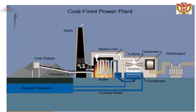This diagram describes a coal-fired power plant. The stack or chimney is the passage for exhausting gases. The steam line shows steam produced after combustion of fuel in the boiler. The turbine is where steam expansion takes place; the generator converts mechanical energy to electrical energy, and the switchyard distributes the energy. The condenser condenses steam with cooling water from the cooling tower or river or reservoir. Coal is supplied from the coal storage unit into the combustion chamber.